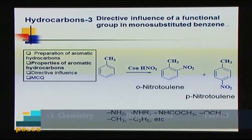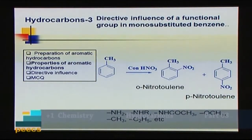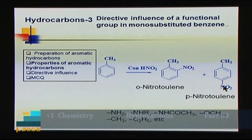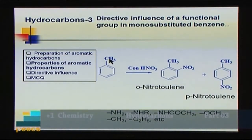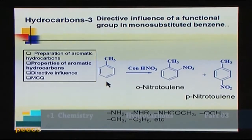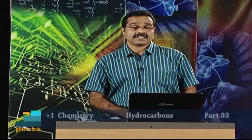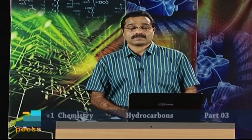If we take toluene (which has a CH₃ group) and nitrate it with concentrated nitric acid and sulfuric acid, the nitro group enters at the ortho position and also the para position, giving a mixture of ortho-nitrotoluene and para-nitrotoluene. So the CH₃ group directs the nitro group to ortho and para positions — it is ortho-para directing. Also, toluene undergoes electrophilic substitution faster than benzene, so the CH₃ group is an activating group.